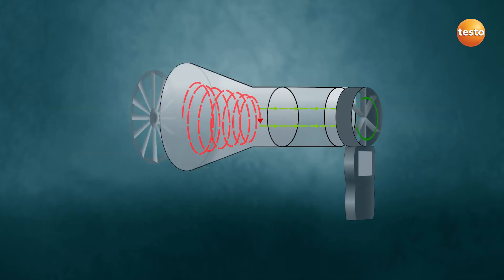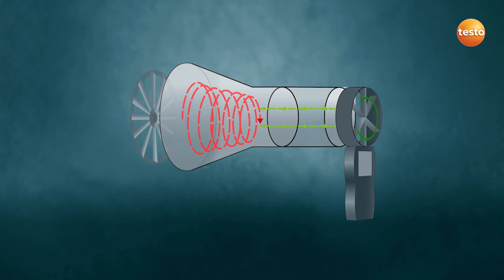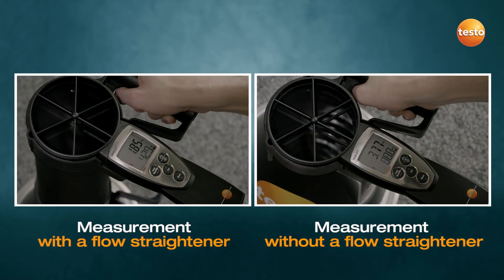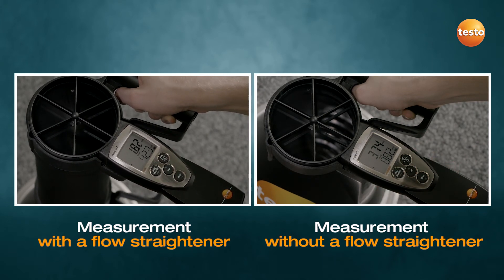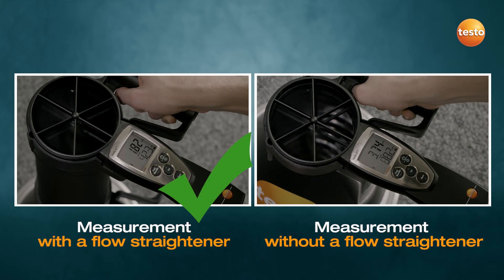With the patented TestoVent 417 flow straightener, any rotational movement of the air is first calmed and changed to a straight flow direction. This directed airflow is then reliably recorded with the vane. That way, the most accurate measurement results are achieved quickly and easily.